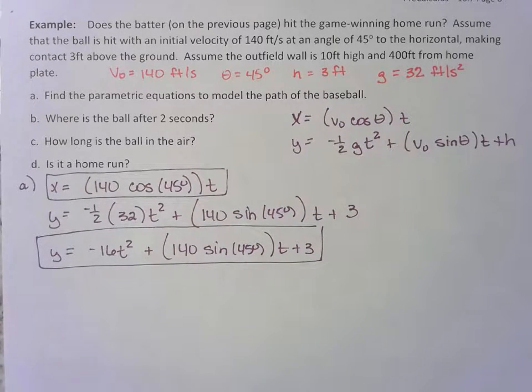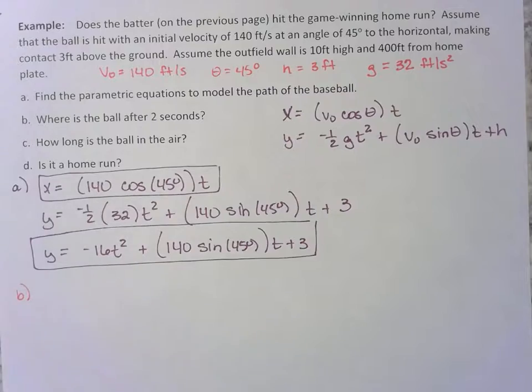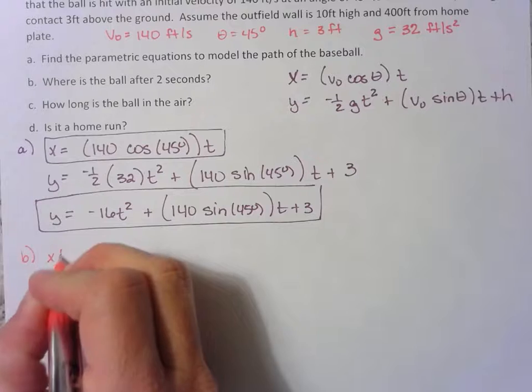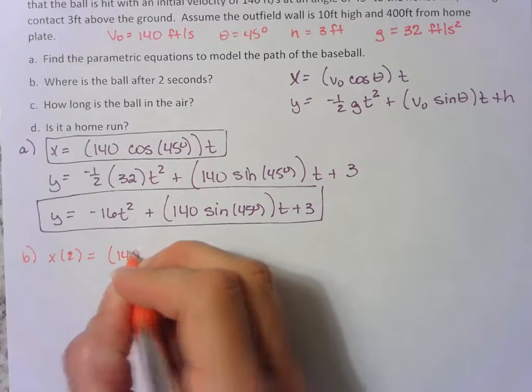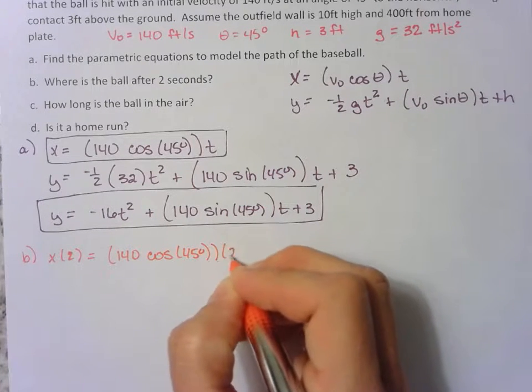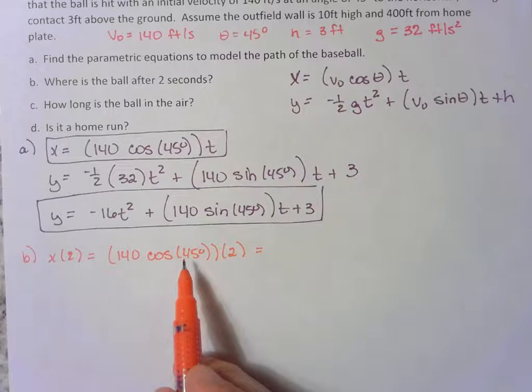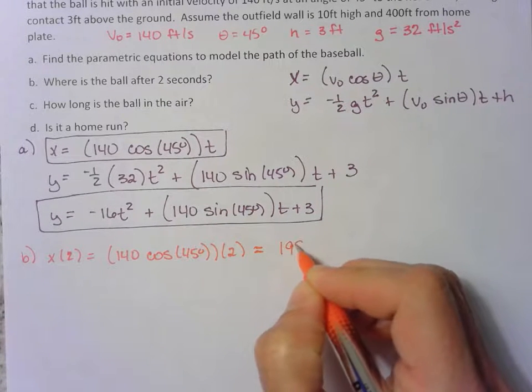Part b says, where is the ball after two seconds? Where is the ball after two seconds? Well, if we plug two into the x formula, type all of that into our calculator. Make sure your calculator is in degrees this time. You find out that x is approximately 198 feet.